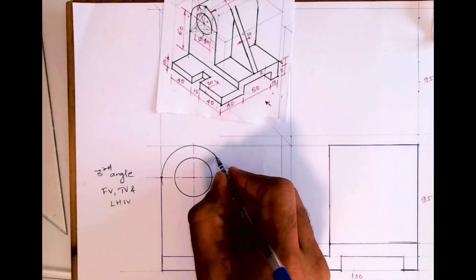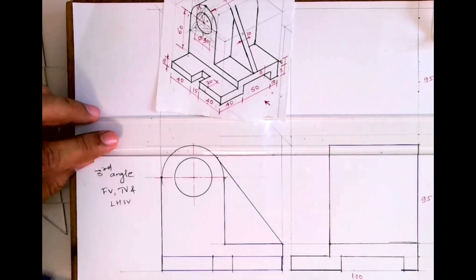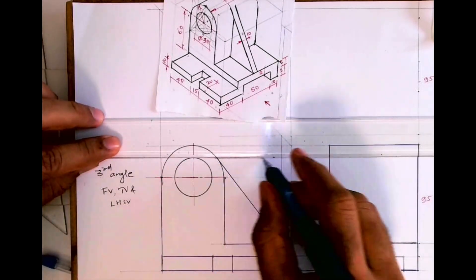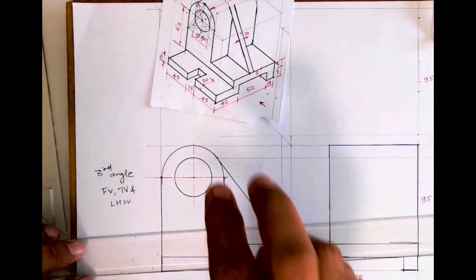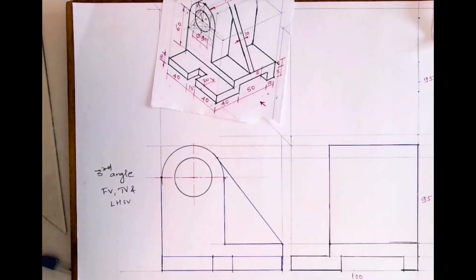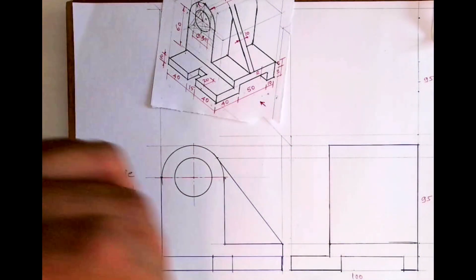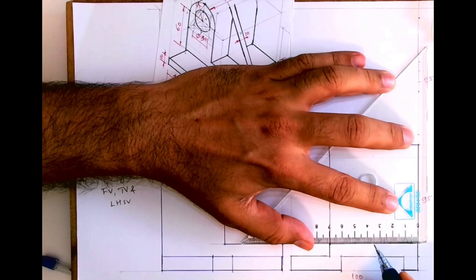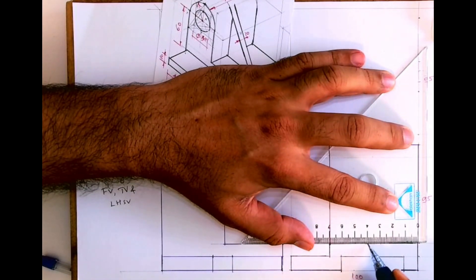Wherever it will cut, that will be the point that we will project in front view to draw that rectangle, that slope which will appear as a rectangle. Always remember whenever you draw a rib, it will be always tangent.